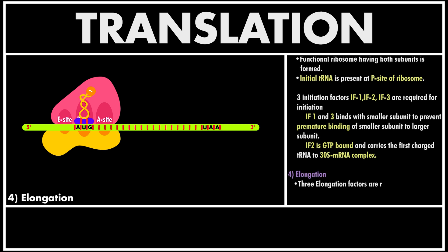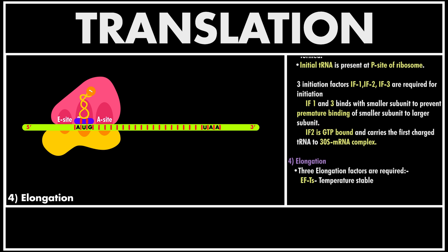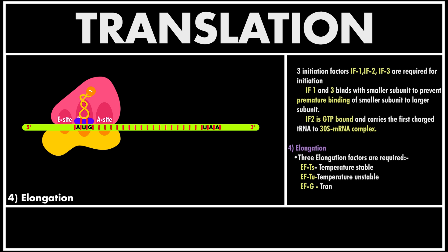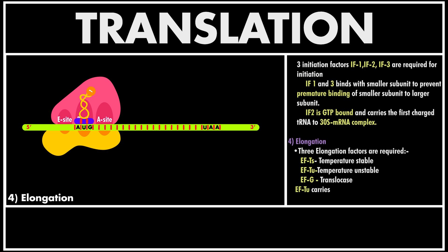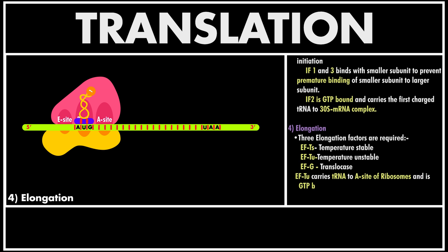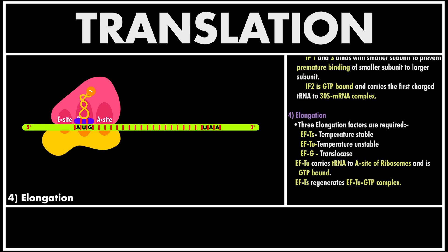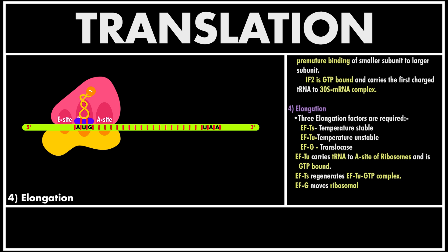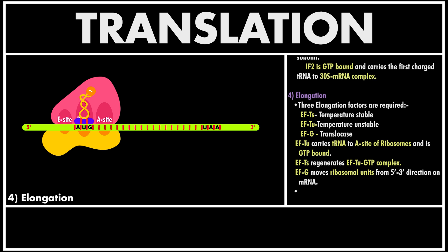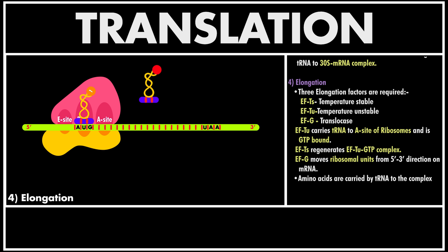After completion of initiation, the next step is elongation. Elongation factors are the proteins which carry out this process and are also of three types: EF-TS or elongation factor temperature stable, EF-TU or elongation factor temperature unstable, and EF-G which is bound to GTP having translocase activity. The second charged tRNA enters the complex from the A site. The first amino acid is removed from the first tRNA and attaches to the second amino acid by formation of a peptide bond.